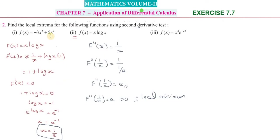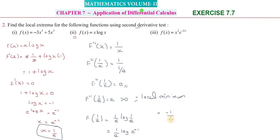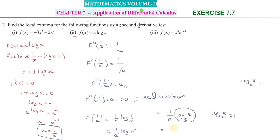To find the local minimum value, substitute x = 1/e into f(x): f(1/e) = (1/e) · log(1/e) = (1/e) · log(e^(-1)) = (1/e) · (-1) · log(e) = -1/e × 1 = -1/e. So the local minimum value is -1/e at x = 1/e.